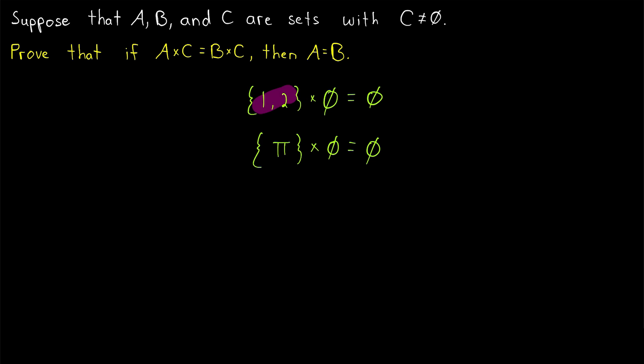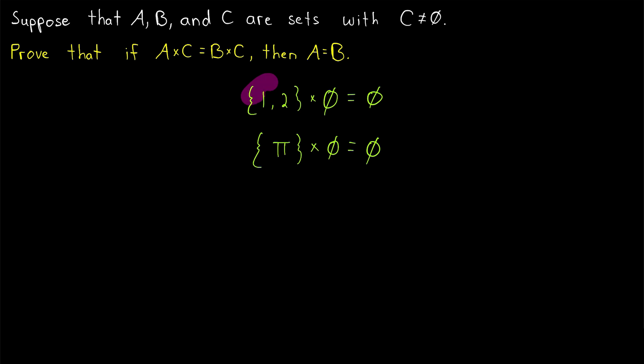For example, the set containing 1 and 2 crossed with the empty set is the empty set, but so is the set containing pi crossed with the empty set. And certainly these two sets are not equal, so we can't cancel out the empty sets. I'll leave links in the description to my lessons on Cartesian products and Cartesian products with the empty set specifically.